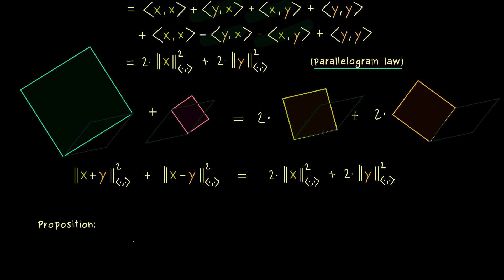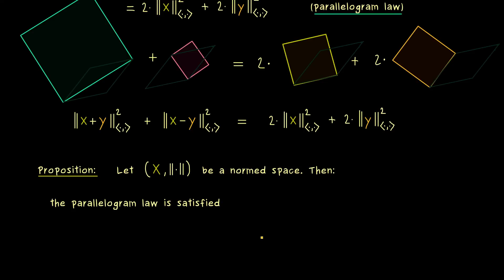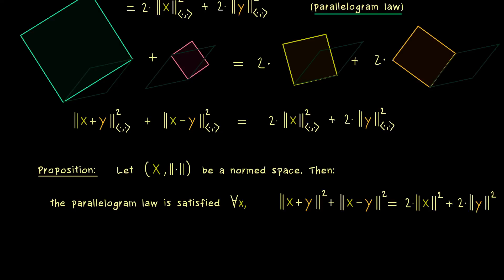It turns out that we already know these special norm spaces — they are exactly our inner product spaces. So let's formulate that precisely: we take a general norm space X, where the norm does not have to be induced by an inner product, it just has to satisfy the usual properties of a norm. We also add the assumption that the parallelogram law is satisfied for this norm, meaning we have our equality for all x and y in the vector space X. Exactly this is what it means for the parallelogram law to be satisfied for this norm space.